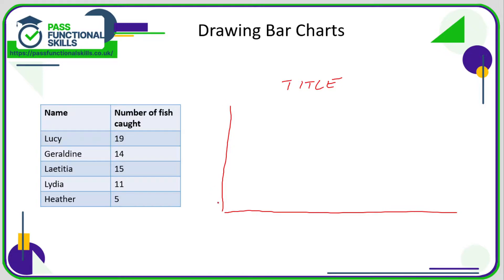We need to think about the scale on the y-axis. We need to go up to the biggest number, which is 19, so don't do a scale going from 0 to 100 — 0 to 20 is probably a good idea. Therefore 10 would be in the middle, then put 15 and a 5. Again, use the lines of your graph paper to make sure this is done correctly.